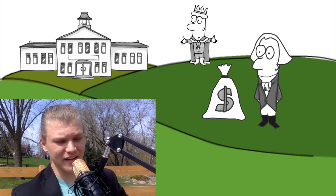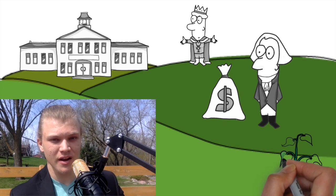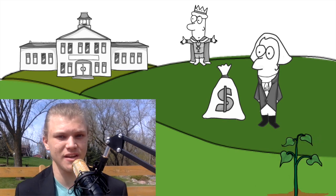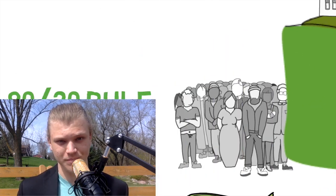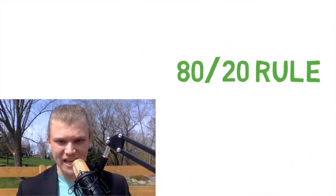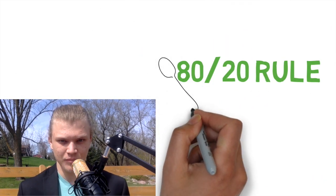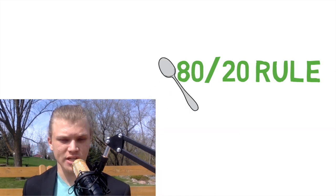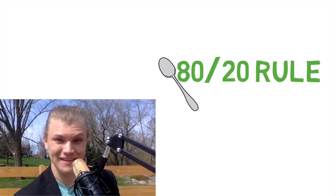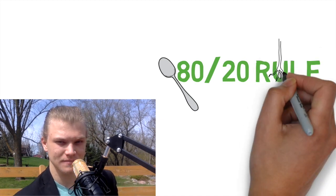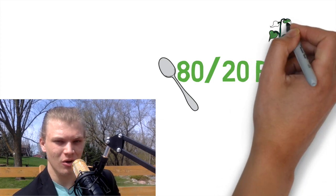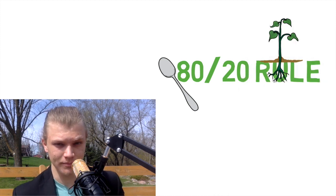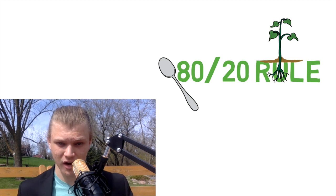But Pareto went even further and he discovered that he noticed in his garden, in his backyard while he was attending university, while he was writing this paper, that 80% of the peas, the little round peas that he got from his garden, only came from 20% of the pea pods. Think about that. Only 20% of the pea pods in his garden produced the majority, 80% of the peas.